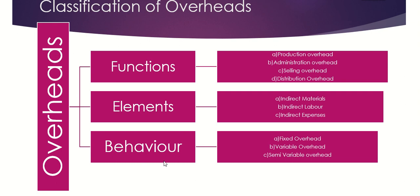The third classification is overheads classified based on behavior or variability. Different overhead costs behave in different ways when the volume of production changes. Based on the impact on output, overheads are classified into fixed overheads, variable overheads, and semi-variable overheads. Fixed overheads remain unaffected or fixed irrespective of whatever the output is. Examples include rent and rates, managerial salaries, building depreciation, postage, stationery, and legal expenses.